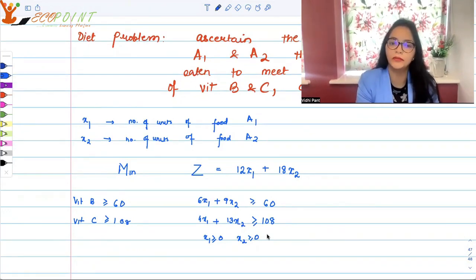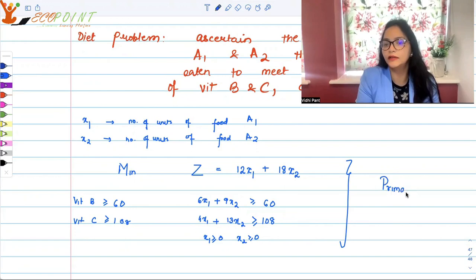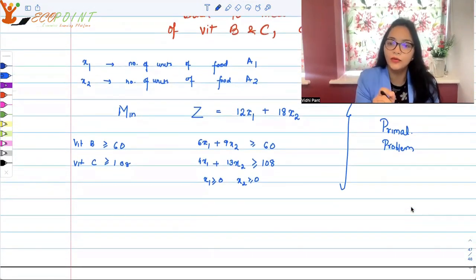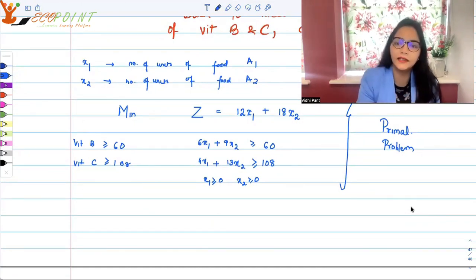This is your base problem. What is this problem? This is my diet problem. This is your base problem and this in the concept of duality will be called as primal. This is your primal. This is the primal problem, and for every primal problem you have a dual that you can construct.